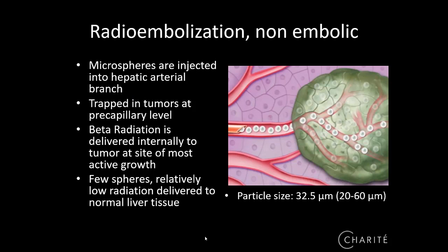Radioembolization is non-embolic, as we need the oxygen in the tissue to let the radiation work. This is achieved by free blood flow and very small particles that are trapped at the pre-capillary level. Beta radiation does not travel as far as gamma radiation, and it is active at the site of most tumor growth activity. The particles have a mean size of 32.5 microns.